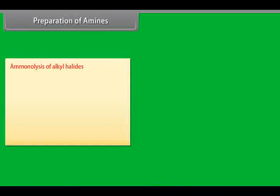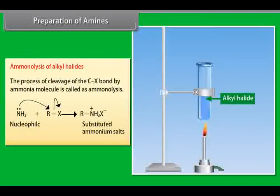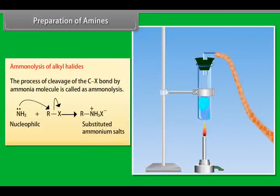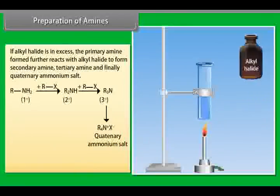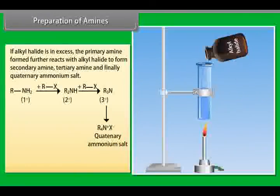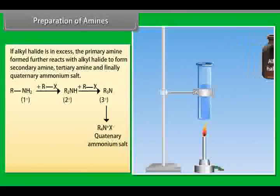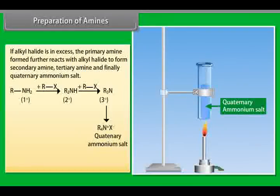Ammonolysis of alkyl halides. The process of cleavage of the C-X bond by ammonia molecule is called as ammonolysis. If alkyl halide is in excess, the primary amine formed further reacts with alkyl halide to form secondary amine, tertiary amine and finally quaternary ammonium salt.